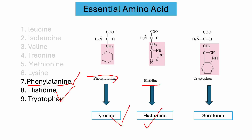The last essential amino acid is tryptophan. Tryptophan is converted to serotonin, a hormone that is very important because it relates to mood, memory, and other functions. Serotonin is also a precursor for the production of melatonin. Tryptophan is also a precursor to produce niacin — as you know, niacin is a vitamin and is very important for various metabolic processes.